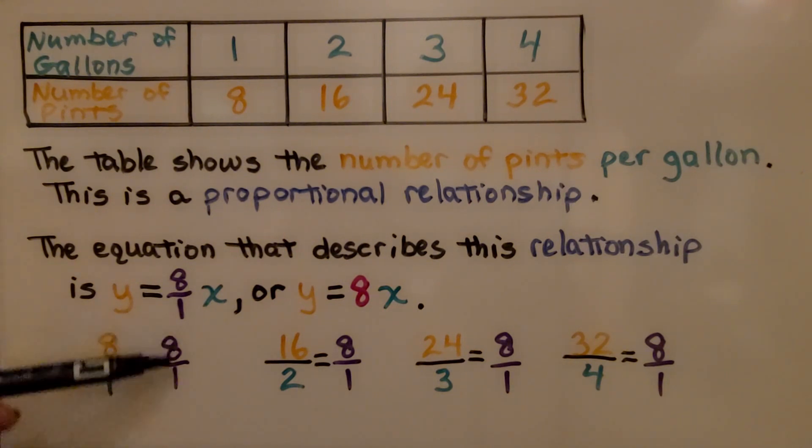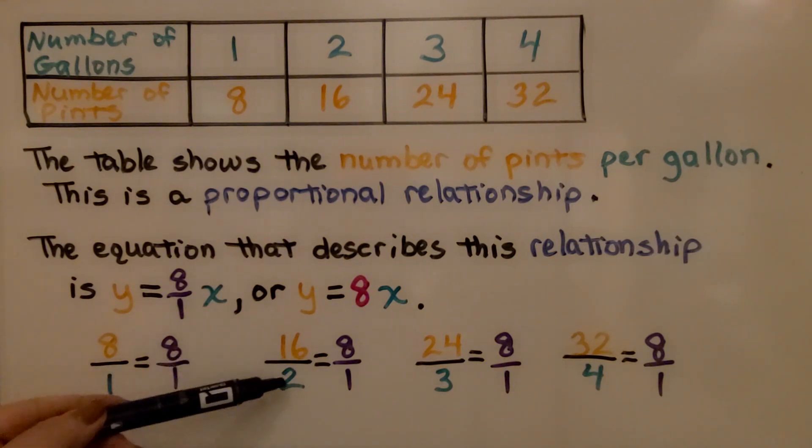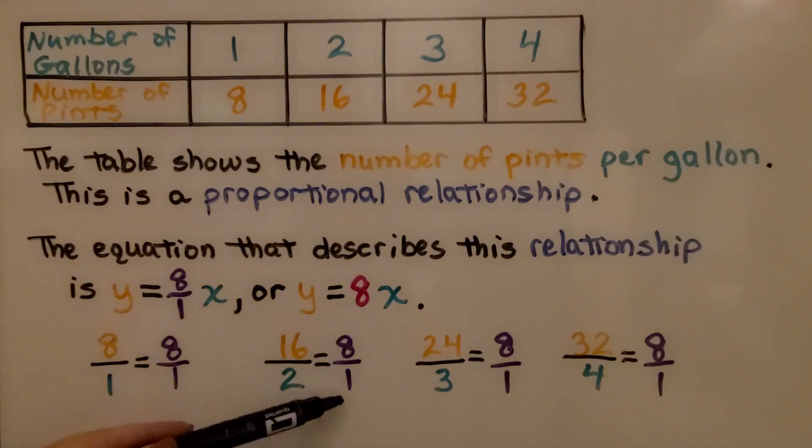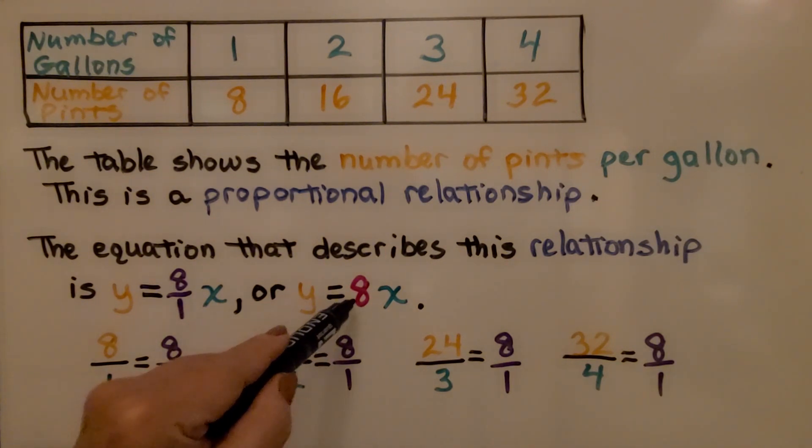We have 8 over 1, which is equal to 8 over 1 in its simplest form. We have 16 over 2 for 16 pints for 2 gallons in its simplest form. That's 8 over 1, 8 to 1. And if we have 24 pints, that's 3 gallons. And in simplest form, that's still an 8 to 1 ratio. And so is 32 pints and 4 gallons. That's an 8 to 1 ratio. So the equation is y equals 8x. 8 is our constant of proportionality. That would be the k in y equals kx.